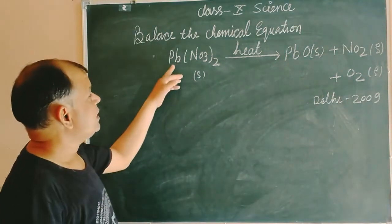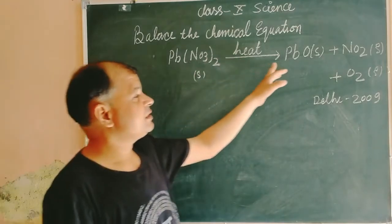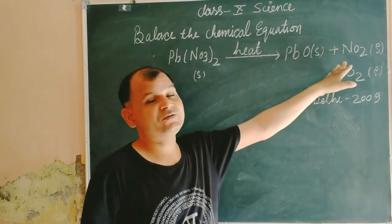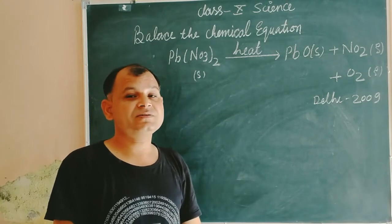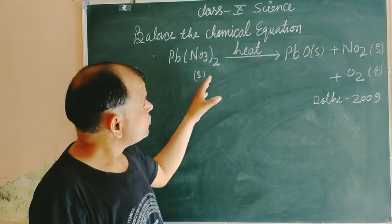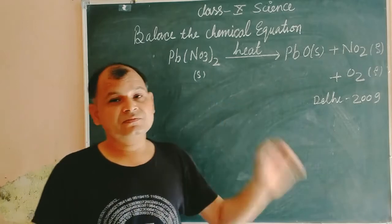In this video we will balance the chemical equation in this question. Lead nitrate heats to lead oxide, nitrogen dioxide and oxygen. Since this is an unbalanced equation, we balance it.